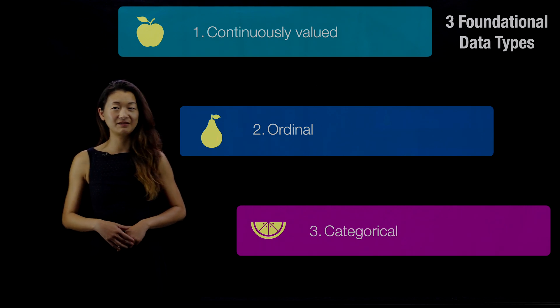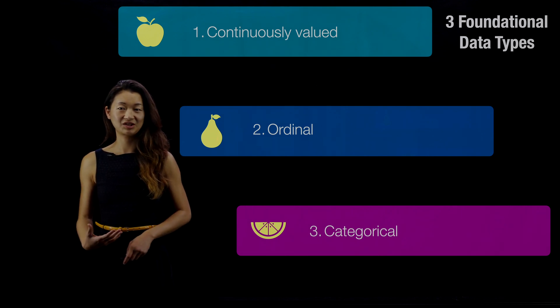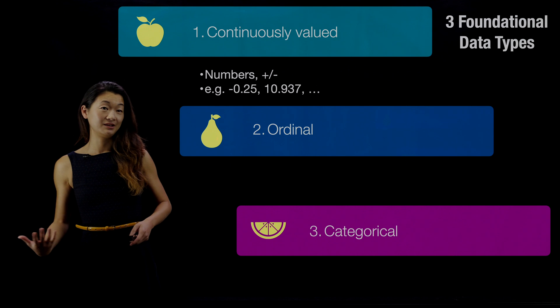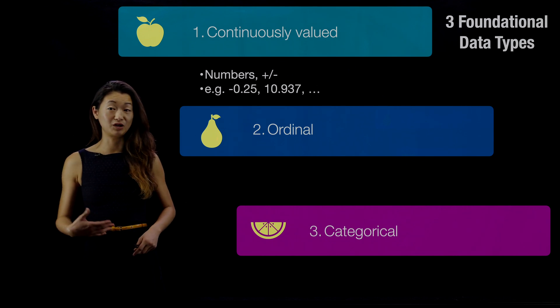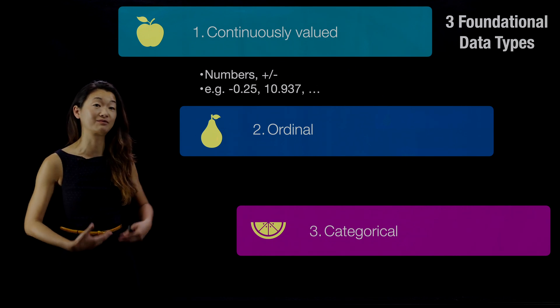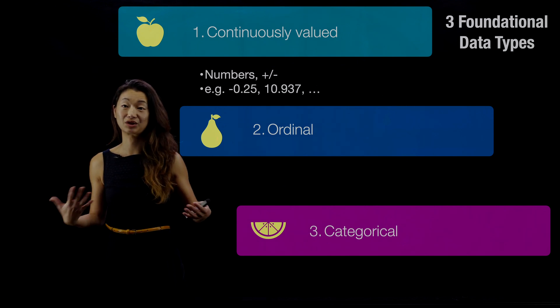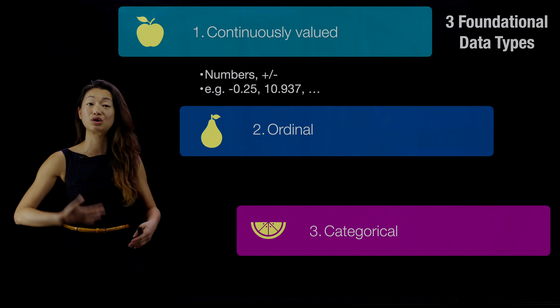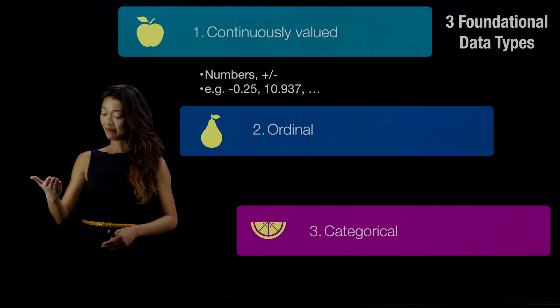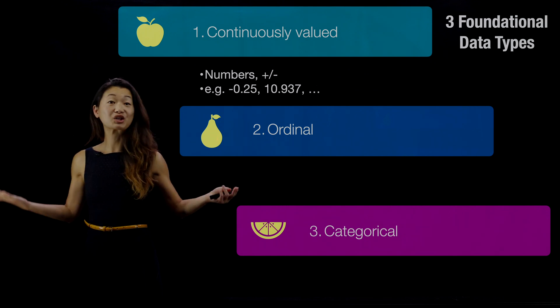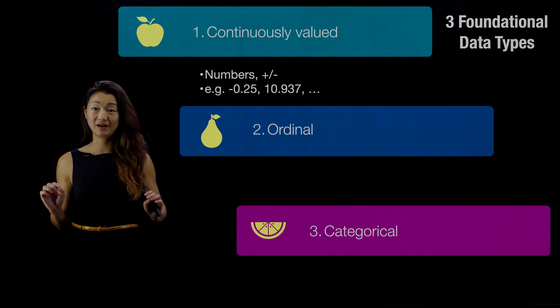Continuously valued data is the most straightforward type of dataset. It's just a number of some kind. These numbers could be positive or negative, whole numbers, fractions, or decimals. These are just regular data that has a number attached to it. These are things that we can measure, like how tall you are, how many centimeters your fingers are. These are all continuously valued datasets.